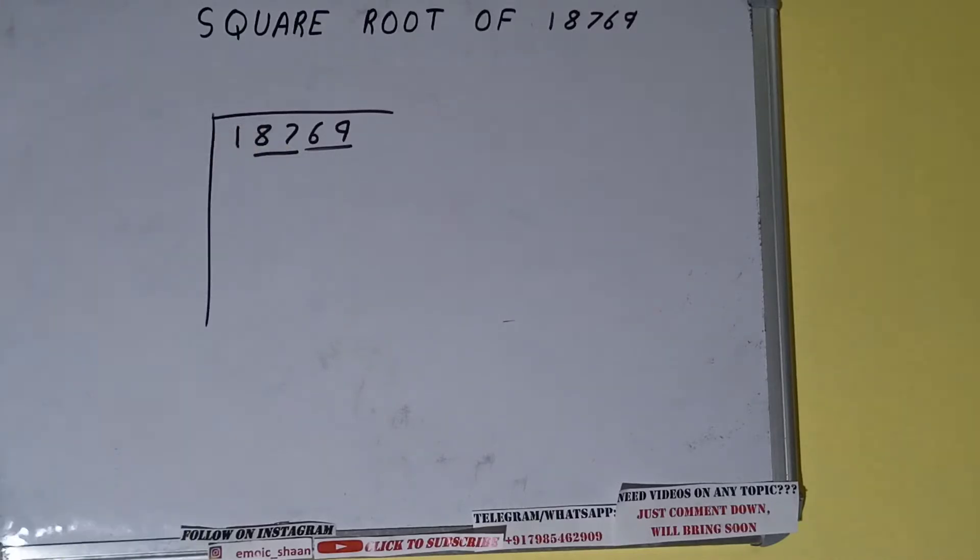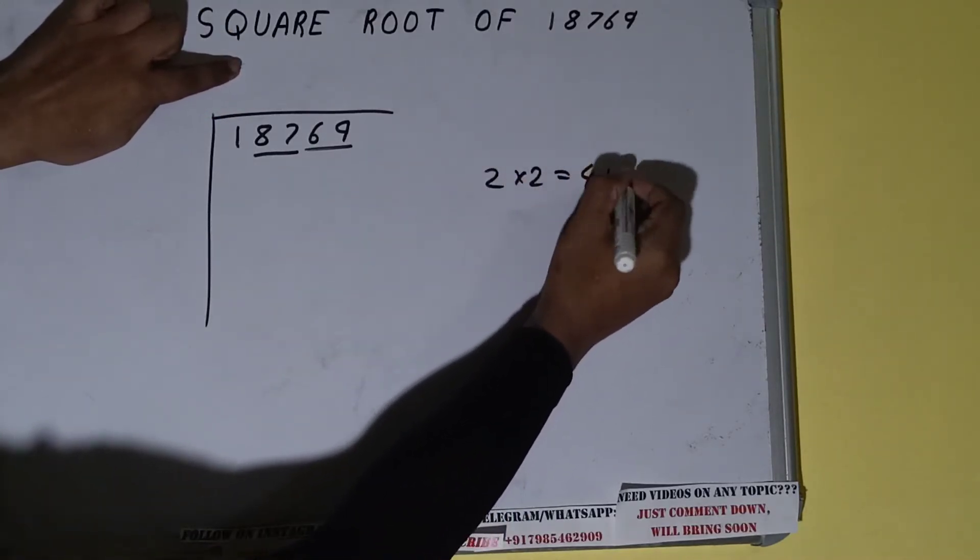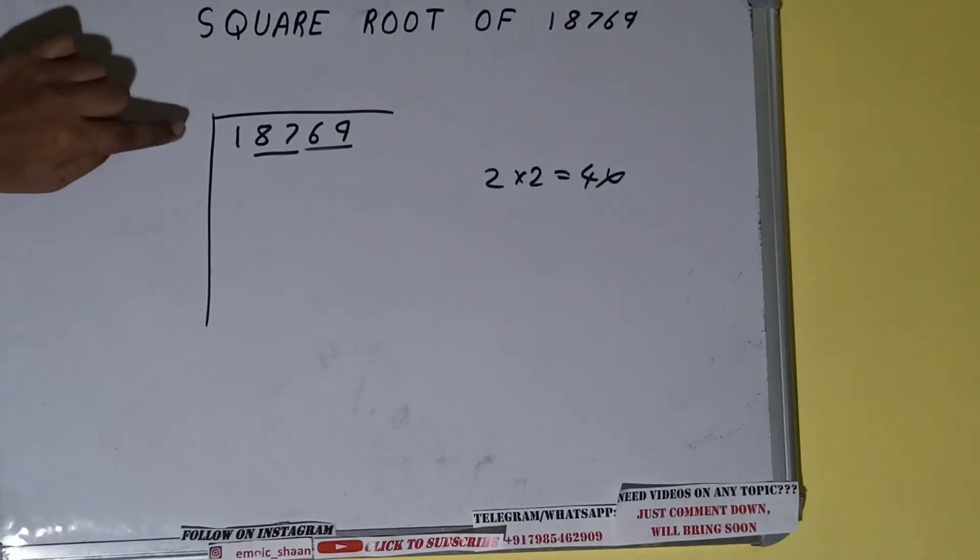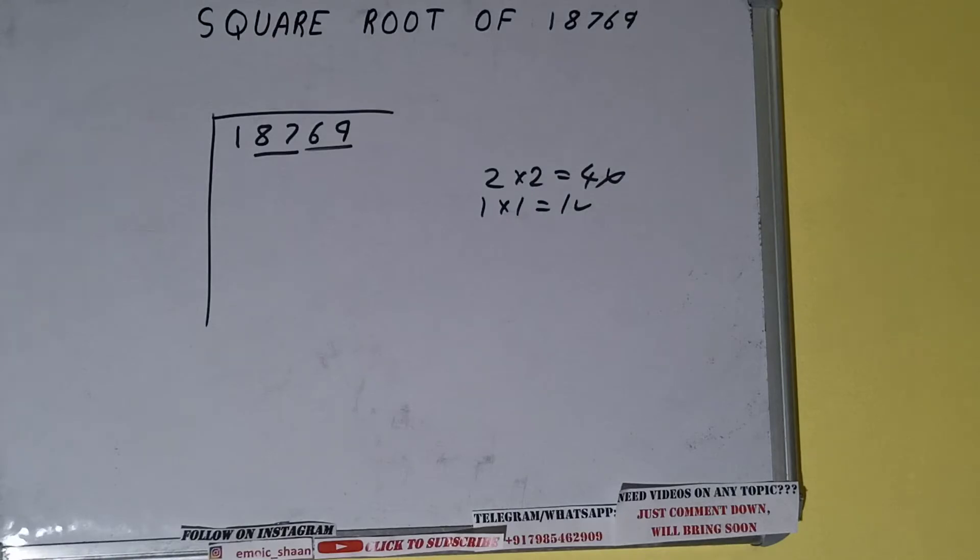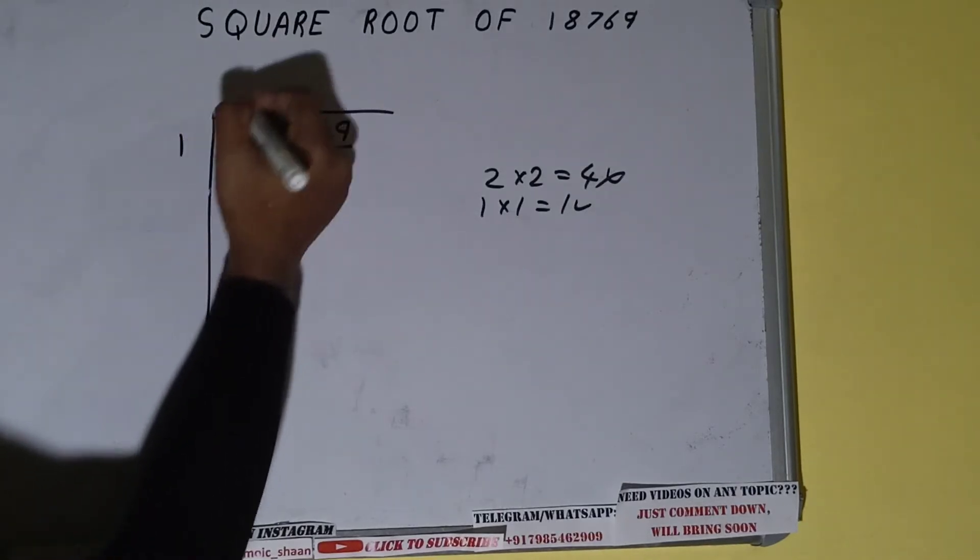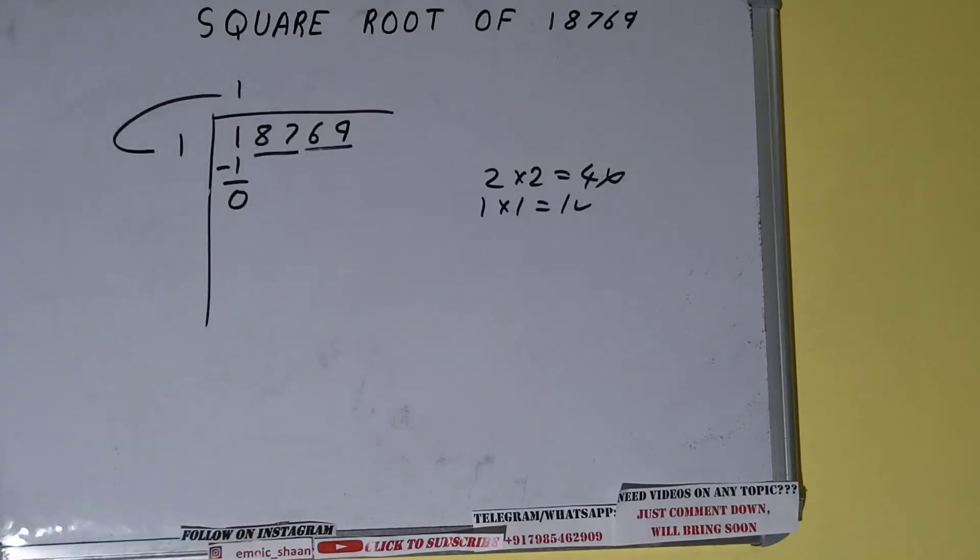The rule is whatever number we write here, we have to write here also. So if we write 2 here and 2 here, we'll be getting 4, which is greater than 1, so we cannot use it. If we write 1 here and 1 here, we'll be getting 1, which is good to use. So 1 here and 1 here, 1 subtract, and we'll be getting 0. We did 1 into 1.